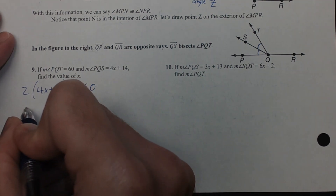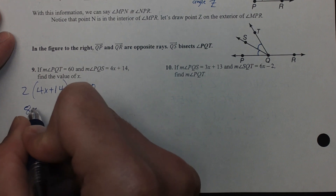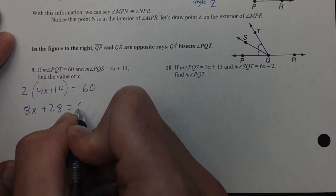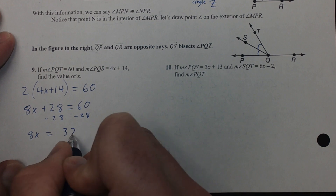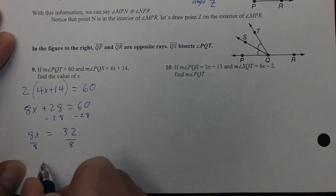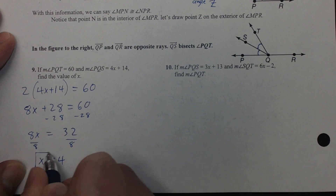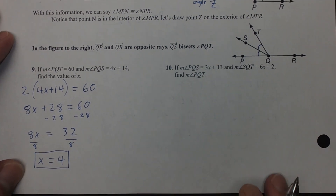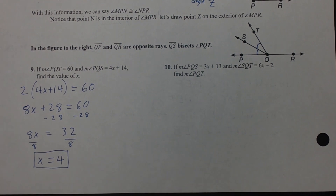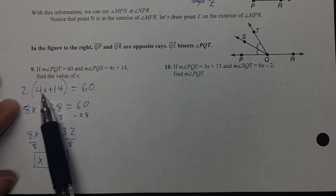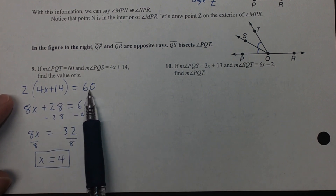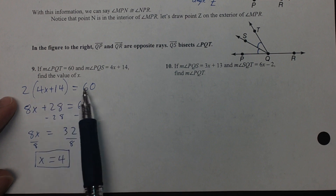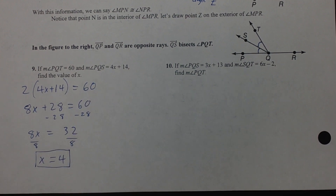Distributing the 2 first: 8X + 28 = 60. Subtract 28: 8X = 32. Divide by 8: X = 4. That was what we were asked to find. Remember, the bisected angle is half as big, so to relate the bisected angle to the original bigger angle, you double the bisected angle to get the measure of the bigger angle.